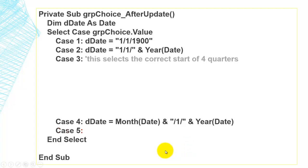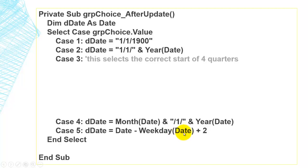Case 5 looks a little more complicated. It takes today's date and subtracts from it the weekday of today's date. Sunday would be one, Monday would be two. So we subtract the weekday value and add two again to get the beginning of this week. For example, if the weekday were three, today's date minus three plus two equals one day back — the start of the week.